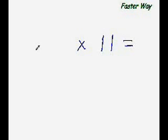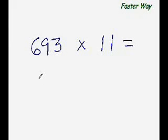So let's take one last example before we move on to the next trick. What is 63 times 11? So 6 plus 3 is 9, so the answer is 693.